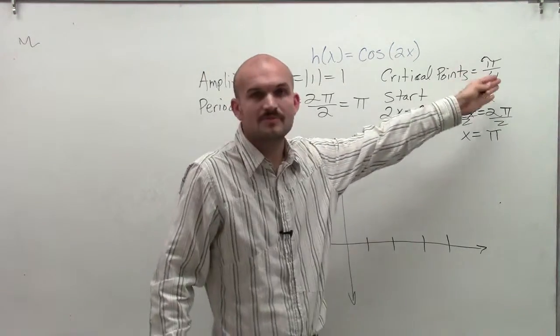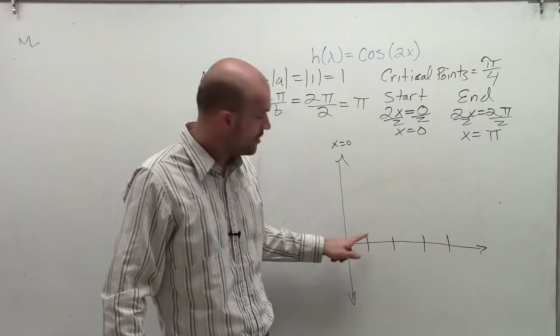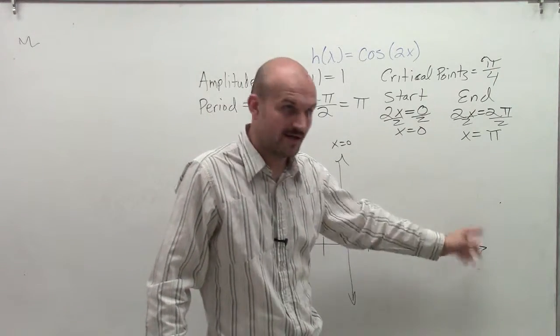The distance between my critical points is π over 4. That means from here to here is π over 4, from here to here is π over 4, from here to here is π over 4, and here to here is π over 4.